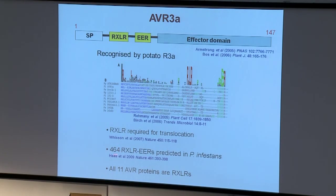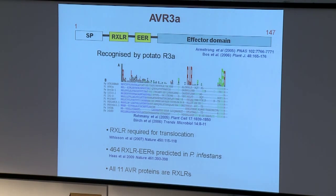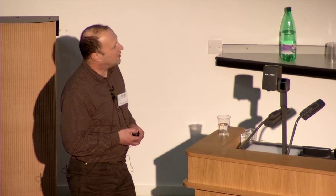These RxLR and EER motifs are present in a wide range of secreted proteins from different plant pathogenic oomycetes. They've been shown to be required for these proteins to get inside living cells. Within the P. infestans genome we have a very large number of genes potentially encoding these effectors, and so far all of the avirulence proteins identified from Phytophthora infestans are members of this class of effector protein. The plant is telling us that these are important.